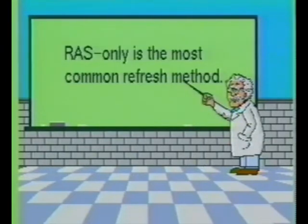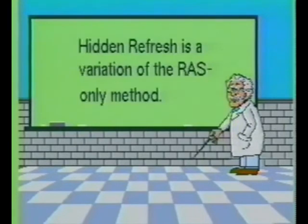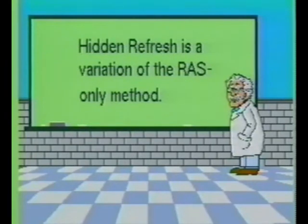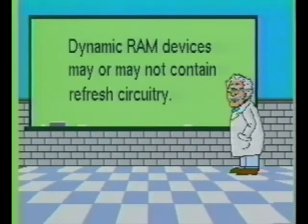The most common refresh method is the RAS-only refresh, which allows one row to be refreshed at a time. The hidden refresh is another variation of the RAS-only refresh cycle; the primary difference is that the data remains valid at the output. Dynamic RAM devices are available with the refresh circuitry contained within the dynamic RAM IC. Separate dynamic RAM controller ICs are also available.